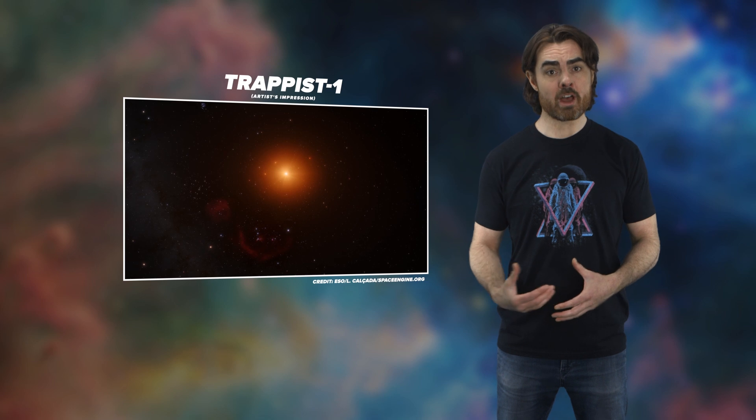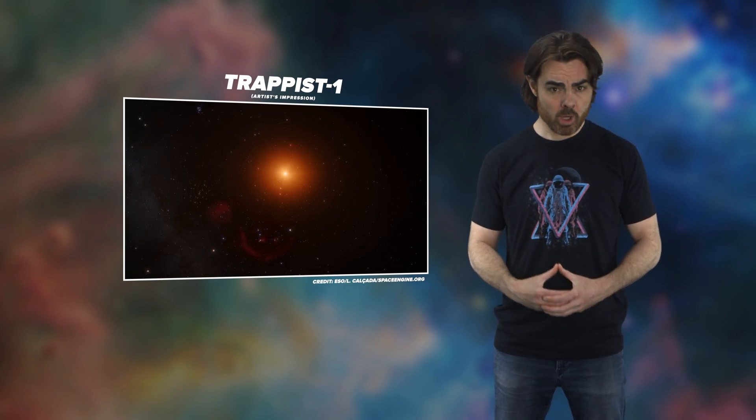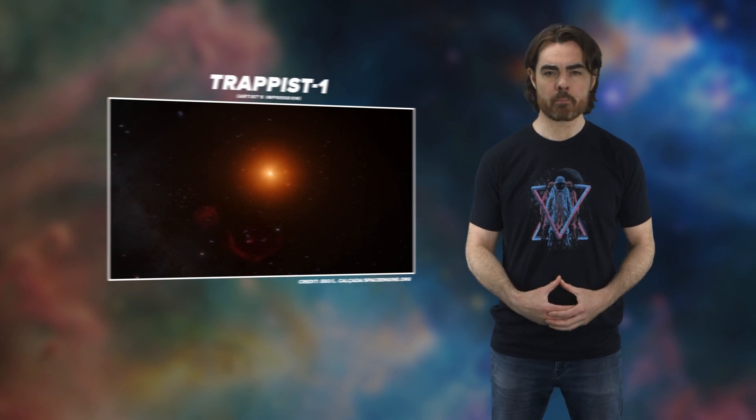But what about new life? We know that red dwarfs do have planetary systems. Just look at TRAPPIST-1 with its seven terrestrial worlds, two of which are at the right distance from the star to have liquid water. We don't know yet whether life can evolve around red dwarf stars, they're violently active when they're young, but perhaps ancient red dwarfs will have the stability needed for new life to take hold.